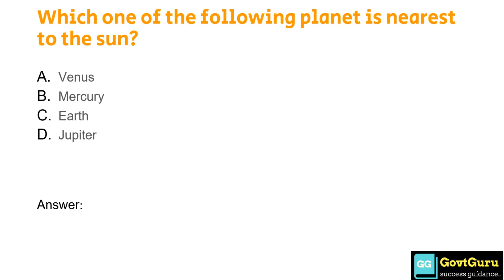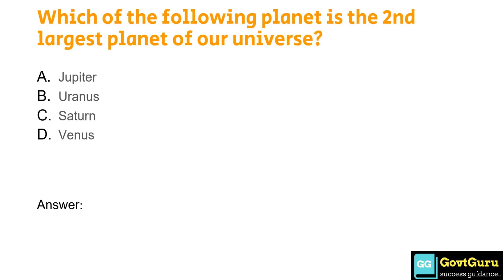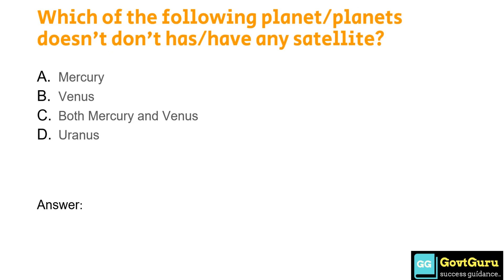Which one of the following planets is nearest to the Sun? Option A: Venus, Option B: Mercury, Option C: Earth, Option D: Jupiter. The answer is Option B, Mercury. Which of the following planets is the second largest planet of our solar system? Option A: Jupiter, Option B: Uranus, Option C: Saturn, Option D: Venus. The correct answer is Option C, Saturn. Which of the following planets don't have any satellite? Option A: Mercury, Option B: Venus, Option C: Both Mercury and Venus, Option D: Uranus. The answer is Option C, both Mercury and Venus.